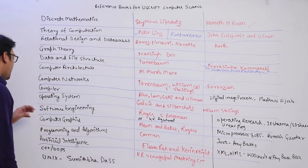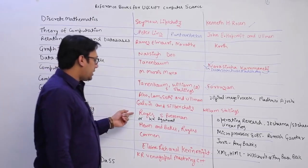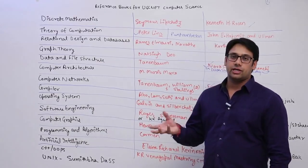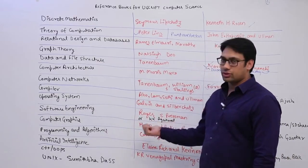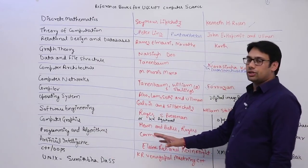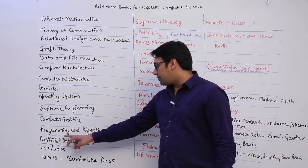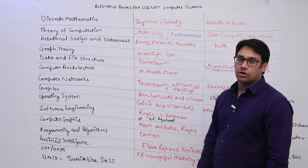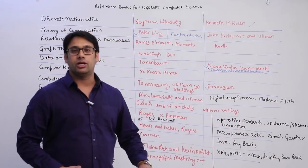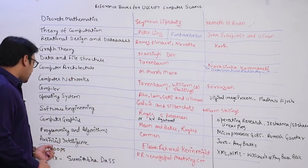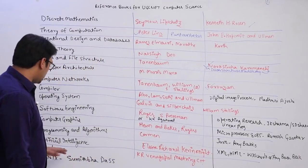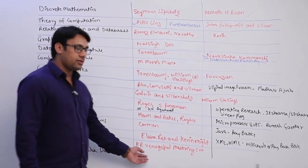For Software Engineering, Robert S. Pressman is the standard book; if you want a local author book you can take KK Aggarwal. For Computer Graphics, refer Hearn and Baker — that is the only book you need. For Programming and Algorithms, the only book you need is Corman, which is called the Bible of Computer Science and the Bible of Algorithms — every algorithm you need to learn is in Corman. For Artificial Intelligence, Kevin Knight is the book.